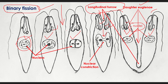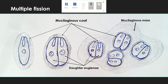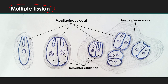There is another process of reproduction in Euglena, called multiple fission. Under unfavorable conditions, during an inactive period, Euglena undergoes multiple fission. The movement of Euglena is stopped during this process.